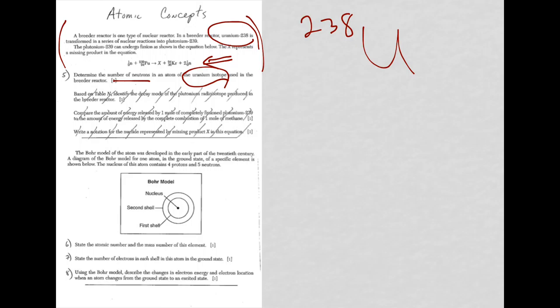That's the number of protons plus neutrons. We need to know the number of neutrons only. So that means we need the atomic number as well. So you got to go to the periodic table to find the atomic number. Let's go ahead and do that.